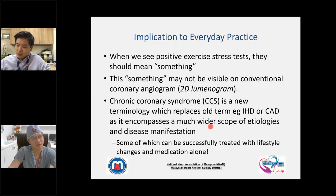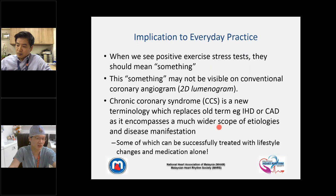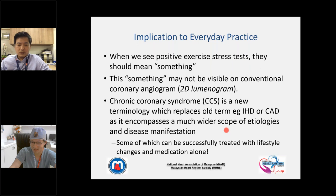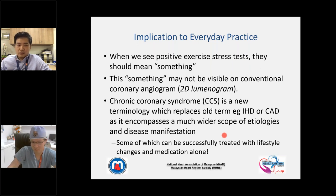The implication for everyday practice: when we see a positive stress test, it should mean something — the machine cannot lie to you. The patient did the same stress test on the same machine; the only difference was intensive medication and lifestyle treatment. This may not be visible on conventional angiogram, which I call a 'two-dimensional luminogram.' The coronary artery is a three-dimensional structure, and angiography only shows the lumen — there are limitations. CCS is a great new term because it encompasses a wider scope of etiology, and some cases can be successfully treated with only lifestyle changes and medication.